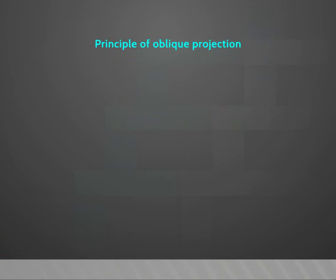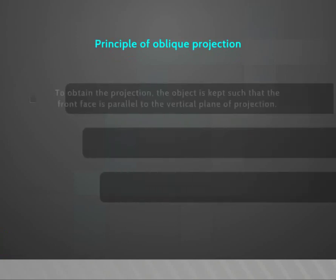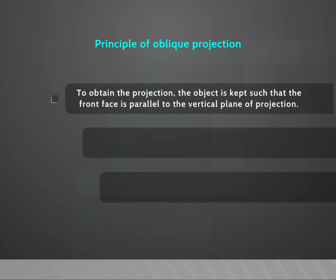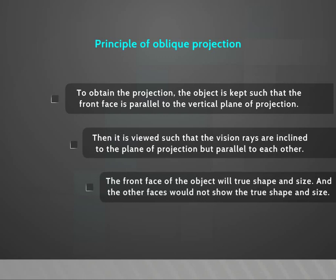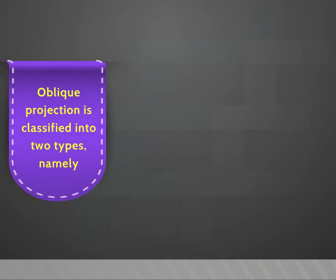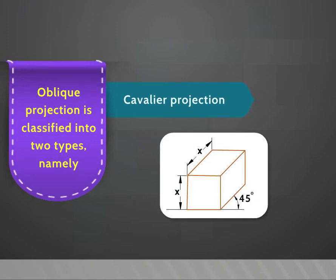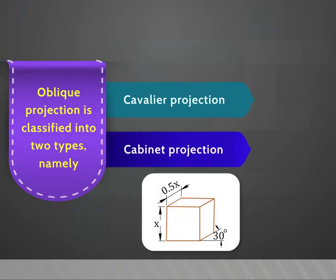Principle of oblique projection: to obtain the projection, the object is kept such that the front face is parallel to the vertical plane of projection. It is then viewed such that the vision rays are inclined to the plane of projection but parallel to each other. The front face of the object will have true shape and size while the other faces would not. Oblique projection is classified into two types: Cavalier projection and Cabinet projection.